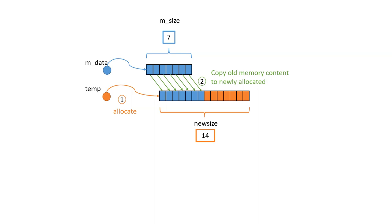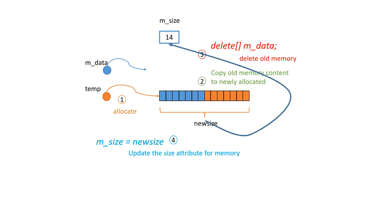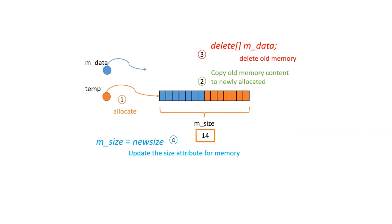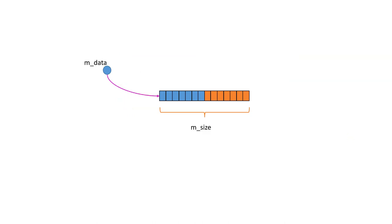After copying, you have all the old information in the new allocation. Now you can get rid of the old one — delete it. After deleting the old one, update m_size to the new size — say 14, not 7 anymore. Always keep it current. Then you get the address inside temp and put it in mData. Therefore, mData and temp point to the same place. Because these operations happen in a separate scope, temp is a local variable and will vanish — but mData holds the address.